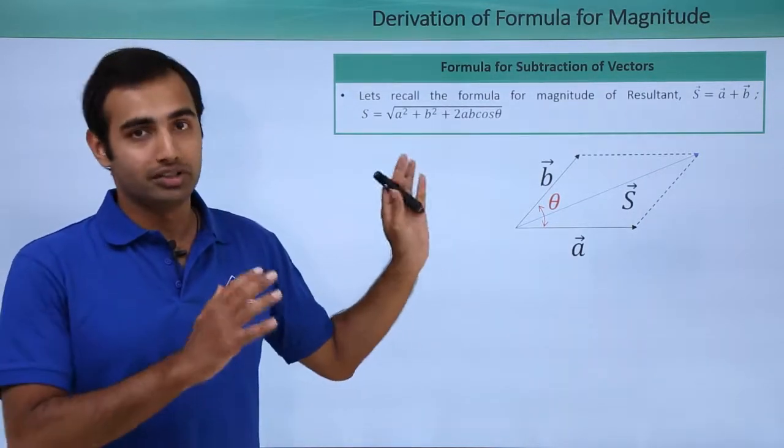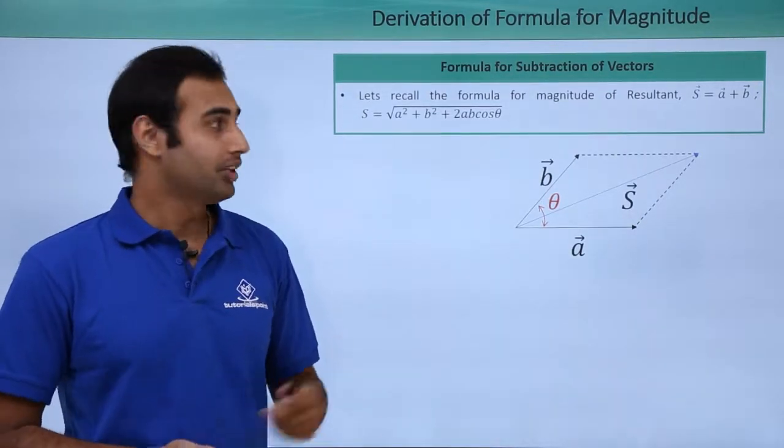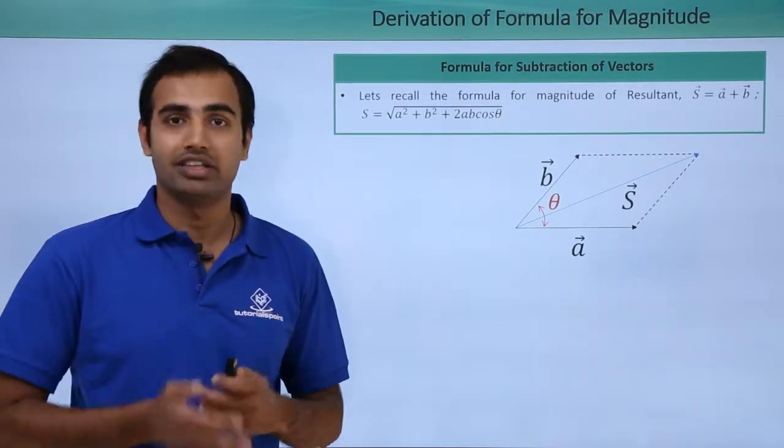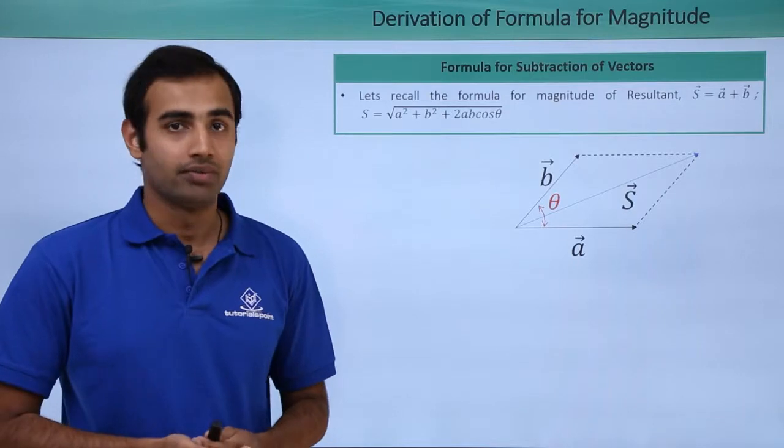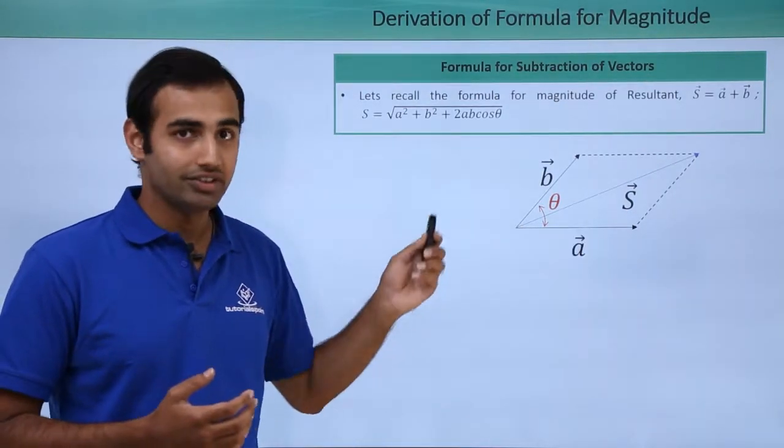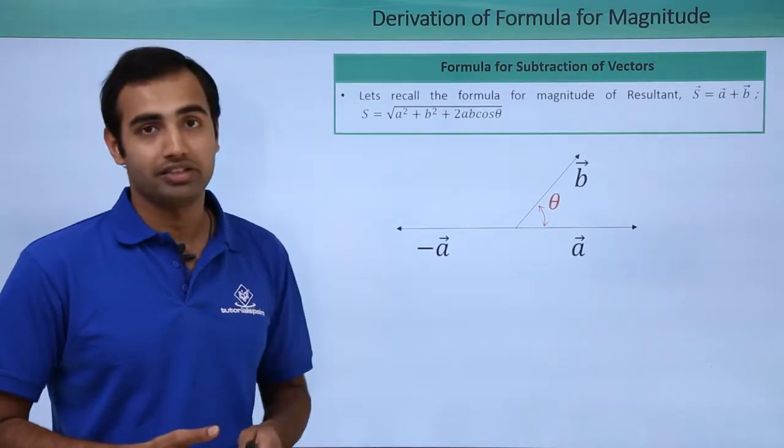Now in this problem, I am going to carry out subtraction of a from b. So I will carry out b vector minus a vector just to find the formula. So if I have to find the formula for subtraction, I have to subtract a first. Let's carry on the subtraction.